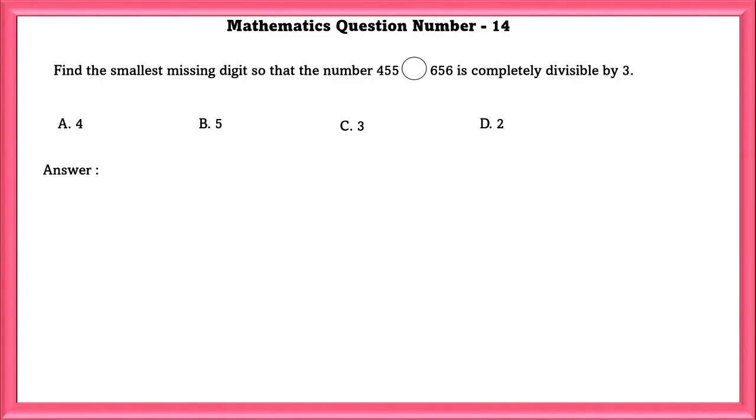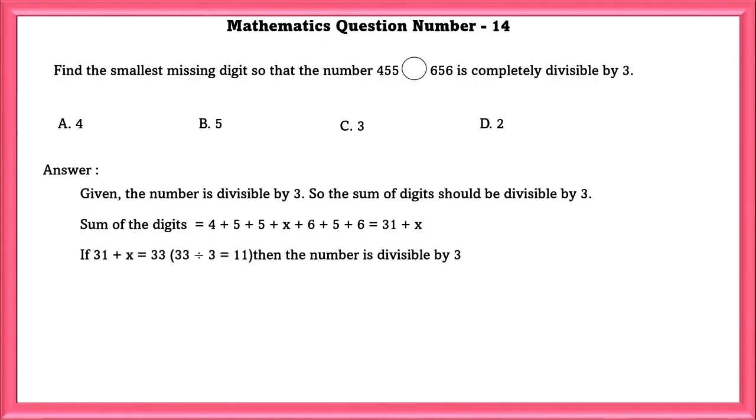Mathematics Question Number 14: Find the smallest missing digit so that the number 455-656 is completely divisible by 3. The divisibility rule of 3 is that sum of the digits must be divisible by 3. So, if we add all these, we will get 31 plus X. 31 is not divisible by 3. But, 33 is divisible by 3. So, if we add 2 to 31, we will get 33. So, the answer is D.